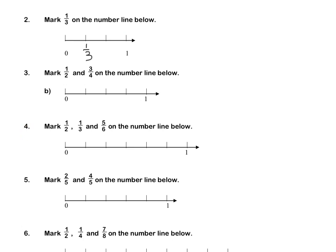Let's look at question 4: mark a half, one third and five sixths on the number line below. I have 6 equal spaces. One half is exactly halfway, or 3 sixths, so I'm going to mark it. One third is equal to 2 sixths, so I mark it at 2 sixths. Lastly, five sixths is marked at the fifth space.